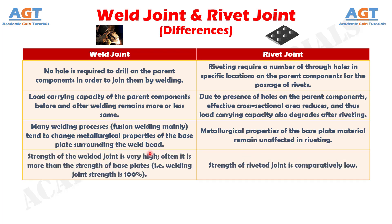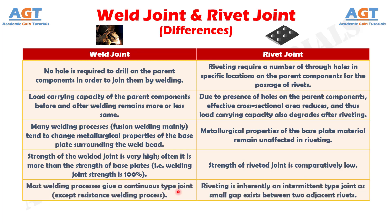Number 4: strength of the welded joint is very high — often it is more than the strength of base plates — so we could also say that welding joint strength is 100%, whereas strength of riveted joint is comparatively low. Number 5: most welding processes give a continuous type joint, except resistance welding process, whereas riveting is inherently an intermittent type joint as a small gap exists between two adjacent rivets.